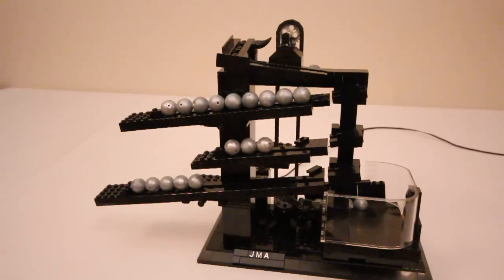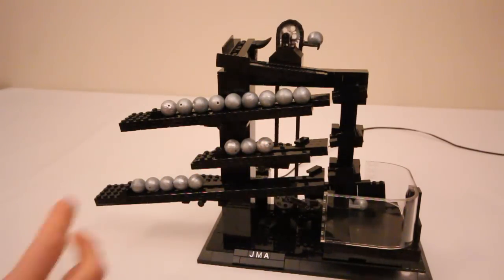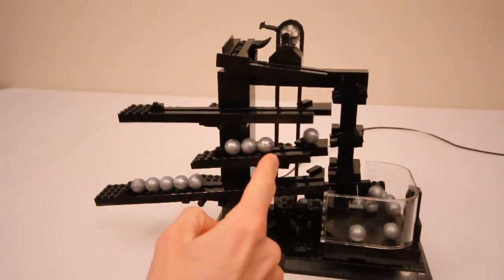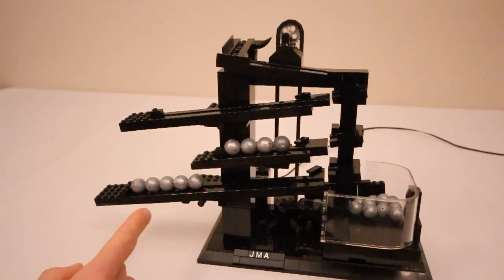When a rail gets full, it tips, which we'll see in a minute. And for the upper two rails, when that happens, the last ball drops down to the next rail, while the rest of them go back to the reservoir. So now it is 5:40.